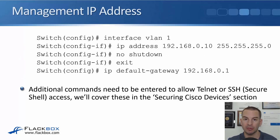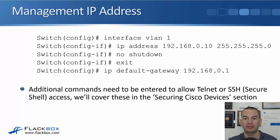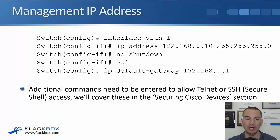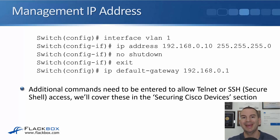Our configuration on the switch: interface VLAN 1, then configure the IP address — ip address 192.168.0.10 255.255.255.0. On a switch, interfaces are enabled by default, but I'm in the habit of always doing a no shutdown whenever I configure an interface. Then exit back to global configuration mode, and to configure the default gateway, the command is ip default-gateway 192.168.0.1. That gives us IP connectivity on the switch — we can ping the switch and ping out from the switch as well.